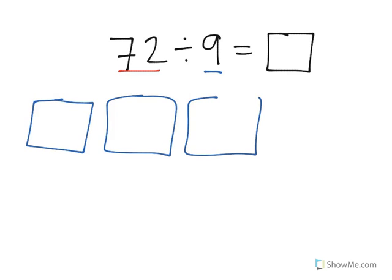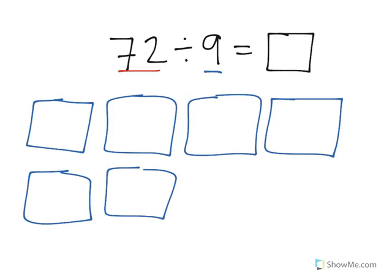So I'll go ahead and draw out 9 equal groups here: 1, 2, 3, 4, 5, 6, 7, 8, and 9.